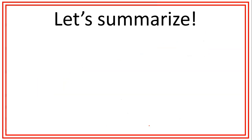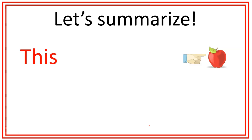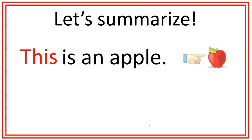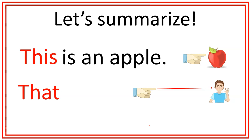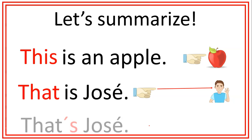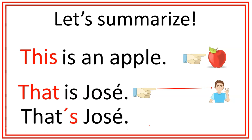Now, let's summarize what we saw today. We saw the demonstrative this, which is used to identify objects that are near. For example, this is an apple. We saw that that is used to identify objects, people, or places that are far away. For example, that is José. Remember, we also saw the contraction — that's José.